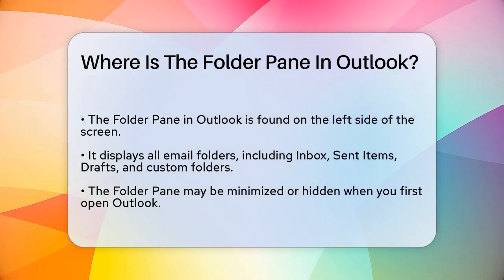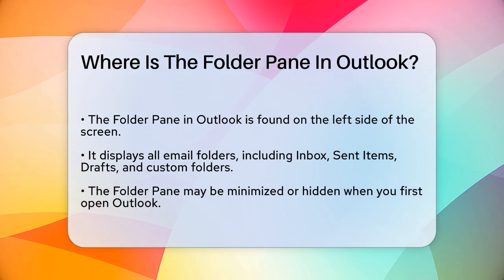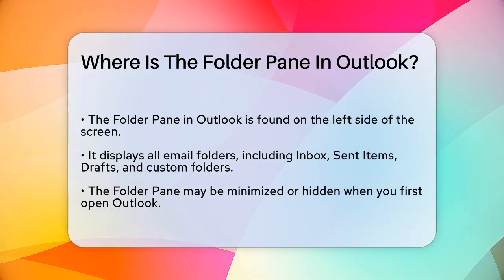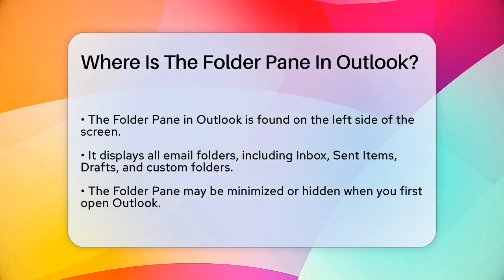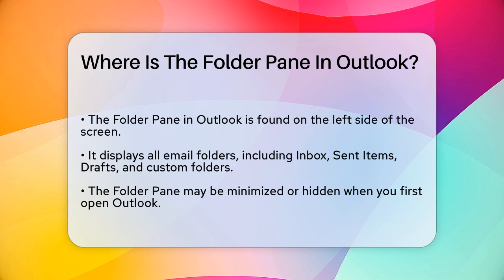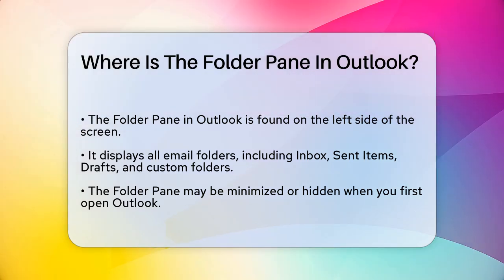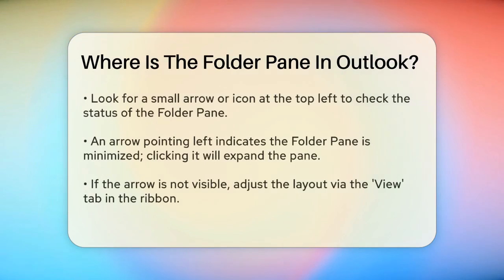The first thing to do is to look at the left side of the screen — this is where you'll typically find the folder pane. The folder pane is a vertical column that lists all your email folders, including your inbox, sent items, drafts, and any custom folders you've created.